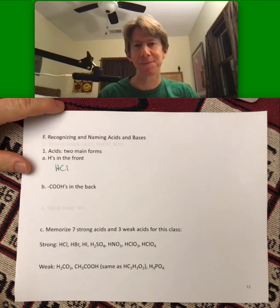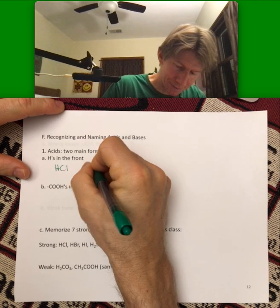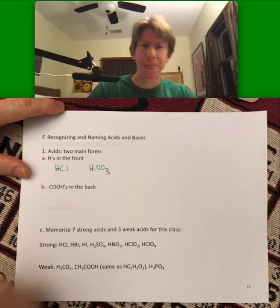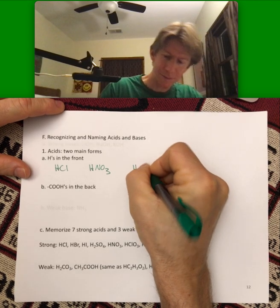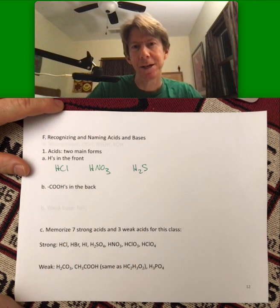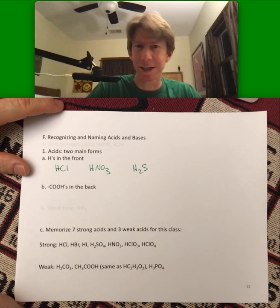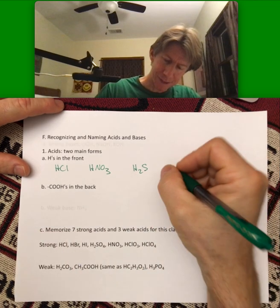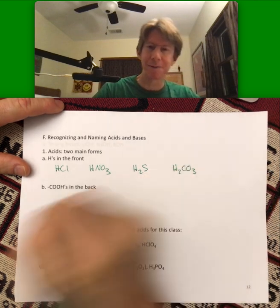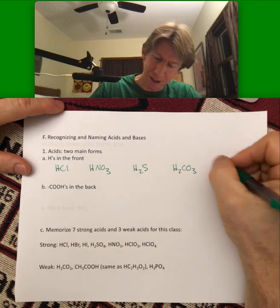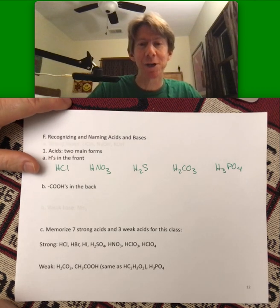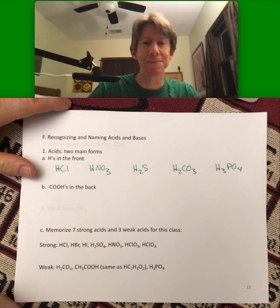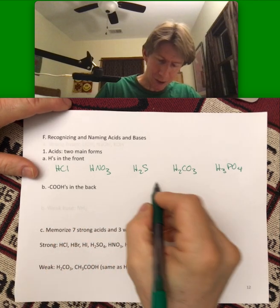HCl - if it starts with an H, it's an acid. HNO3, also an acid. H2S? It's got H's in the front. I don't know if I've ever seen that compound before, but it's got H's in the front, so it's an acid. It can have two H's or three H's. Three H's is the most I've ever seen. Phosphoric acid, that's that last one, in many sodas. All these are acids.